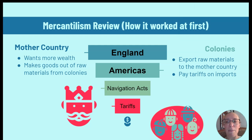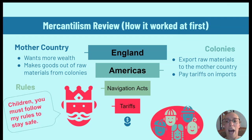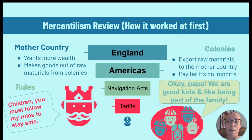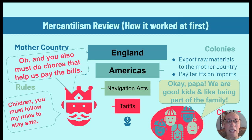Think of the relationship like a family. The mother country is a parent — we'll use the symbol of a king to represent England's government — that would make the colonies the children. At first, the colonies needed the mother country to take care of them. Jamestown would not have lasted more than a year without food shipments from England. The English navy also protected the colonies from pirates and other European countries who wanted more colonies.